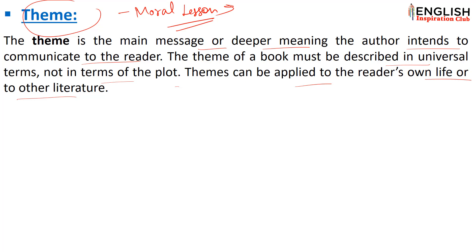I hope you have understood the theme. So to summarize, we talked about the five elements of novel: plot, character, conflict, setting, and theme. It is also important to note point of view — in which person the work is written — and the tone, whether it is written in a romantic or critical way. But the five types of elements we discussed are all related to novel and fictional work.